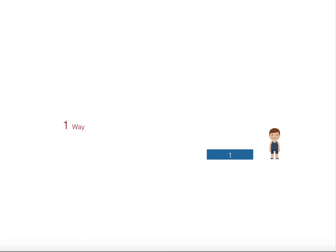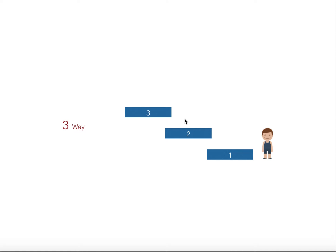Let's break down the problem into simpler cases. If you have only one step, there is just one way to reach the top. If you have two steps, there are two ways: you can go step one then step two, or from the ground you can directly jump to step two.